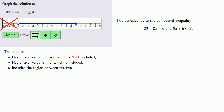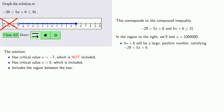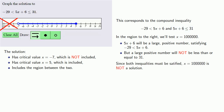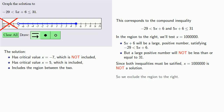Finally, in the region to the right, we'll test x equals 1,000,000. We find that 5x plus 6 will be a large positive number, satisfying our first inequality, minus 29 less than 5x plus 6. But a large positive number will not be less than or equal to 31. Since both inequalities must be satisfied, x equals 1,000,000 is not a solution, so we exclude the region to the right.